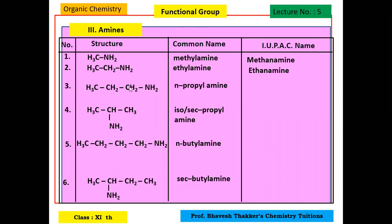For 3 carbons, you have to put numbering. The amino group is closest to the end, so we number 1, 2, and 3. The IUPAC name is propan-1-amine. For the fourth compound, numbering can be done from right or left — it will be the same. Either way, the amino group is on the second carbon, so the name is propan-2-amine.